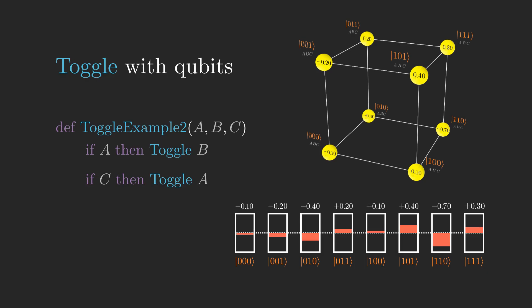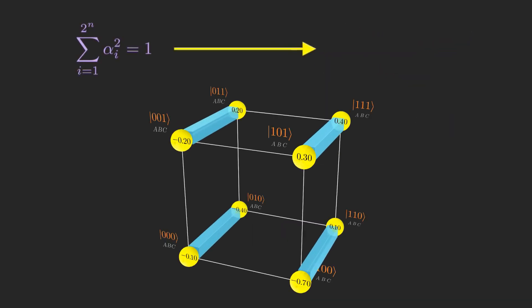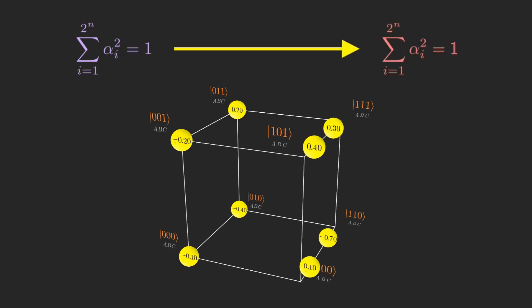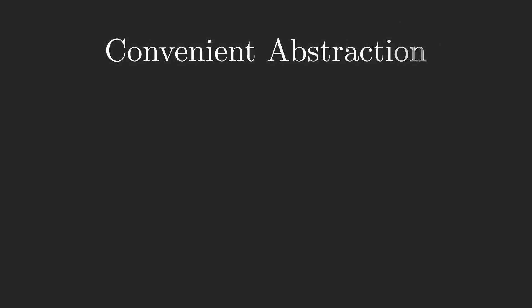So take a moment here to notice that the extensions of toggle and the conditional if-then toggle are valid quantum instructions, because the sum of the squares of the amplitudes doesn't change if we swap a pair of amplitudes. For more complicated instructions, there's a convenient abstraction that will help our analysis, which is that it turns out to be sufficient to only define what a quantum instruction does to each of the basic states.